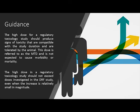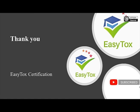As additional guidance for selecting the high dose in toxicology studies: the high dose for a regulatory toxicology study should produce signs of toxicity that are compatible with the study duration and are tolerated by the animal. This dose is referred to as the MTD and is not expected to cause morbidity or mortality. The high dose in a regulatory toxicology study should not exceed doses investigated in the dose range finding study, even when the increase is relatively small in magnitude.